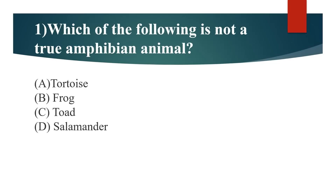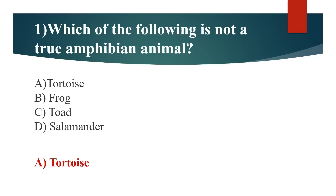First question: Which of the following is not a true amphibian animal? Option A: Tortoise. Option B: Frog. Option C: Toad. Option D: Salamander. Answer is Option A: Tortoise.